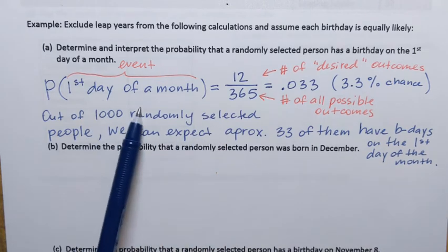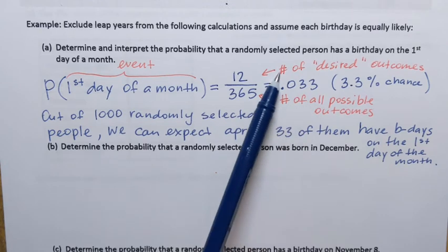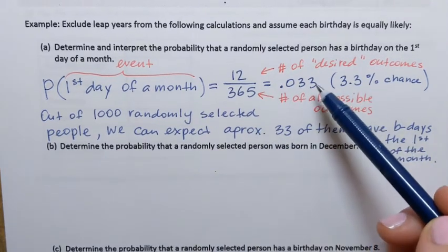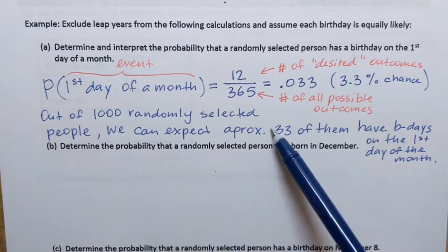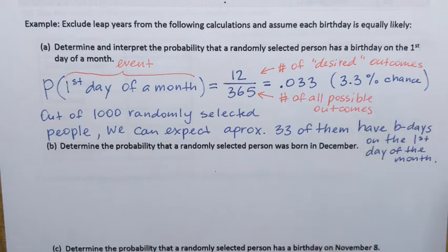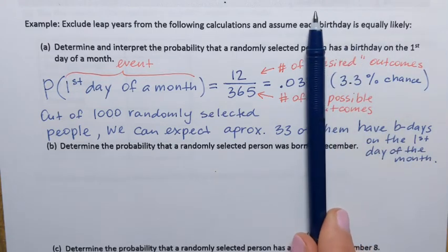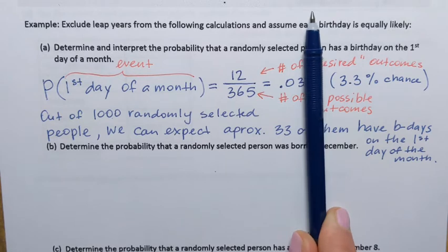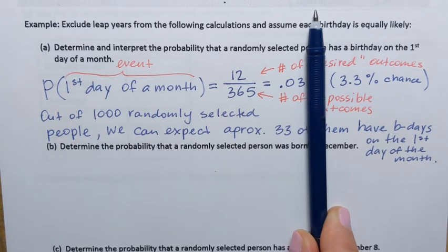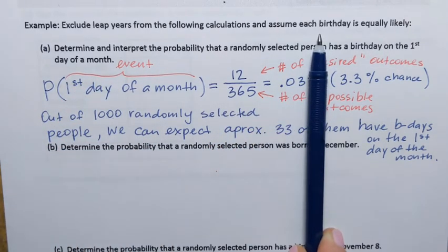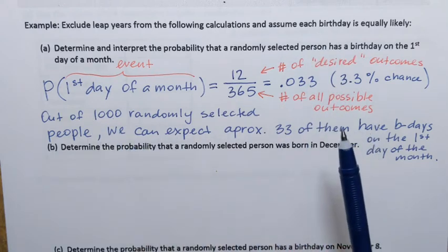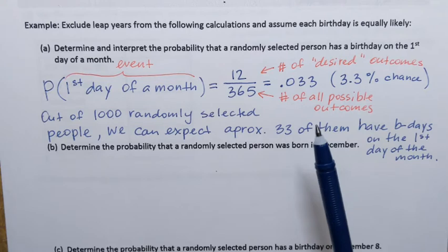Why did I say out of 1,000? It's because of how I rounded the decimal — to three decimal places, giving 0.033, so 33 out of 1,000. If I had rounded to two decimal places, that would be 0.03, or 3 out of 100. I would then say: out of 100 randomly selected people, we can expect approximately 3 of them to have birthdays on the first day of a month. With that interpretation, we get an even better feeling of what the probability indicates.